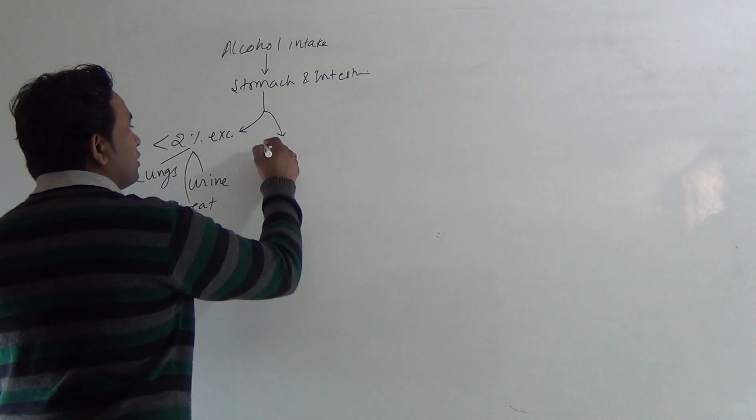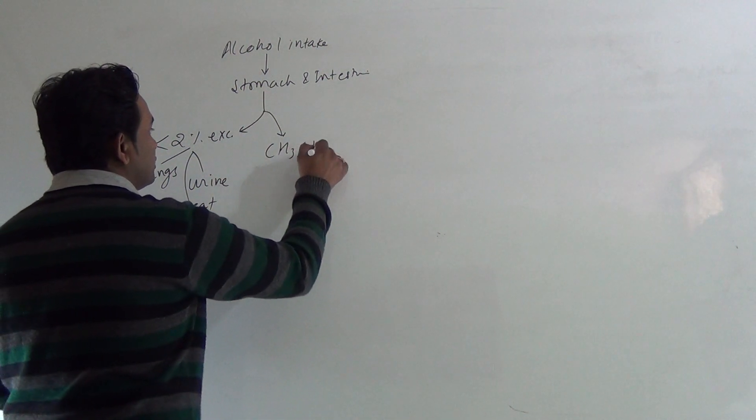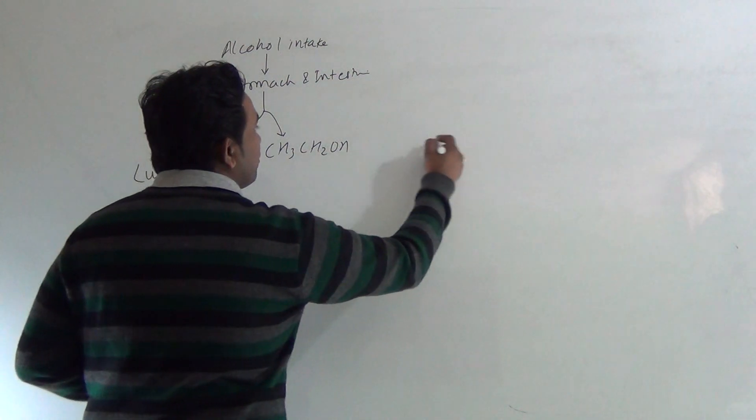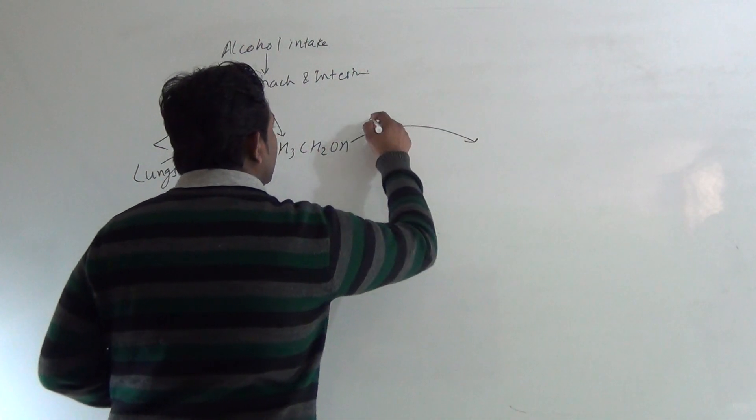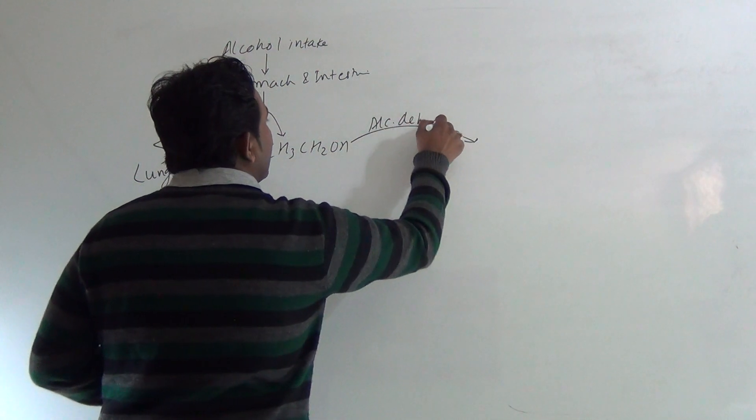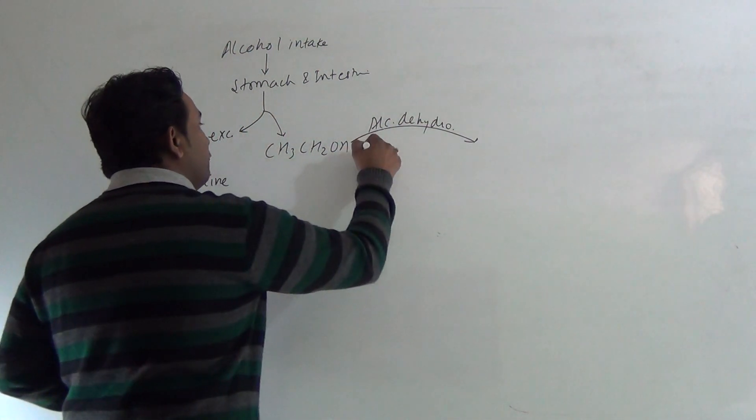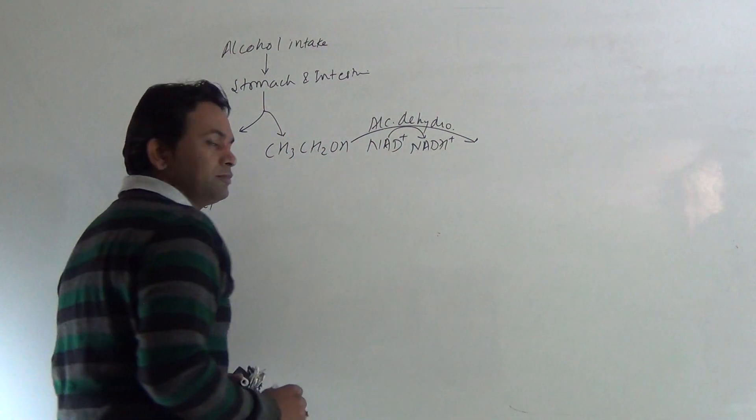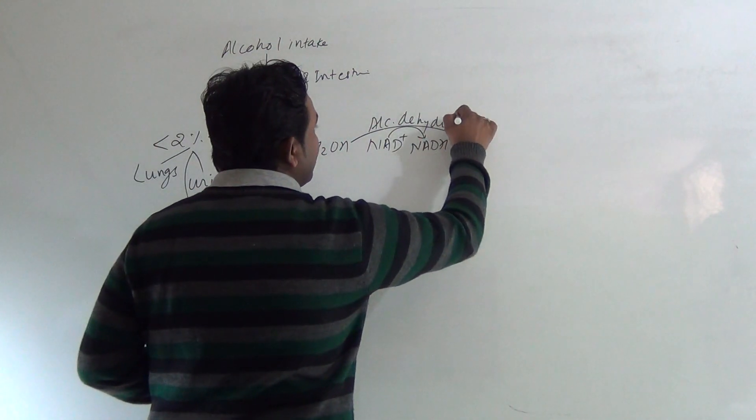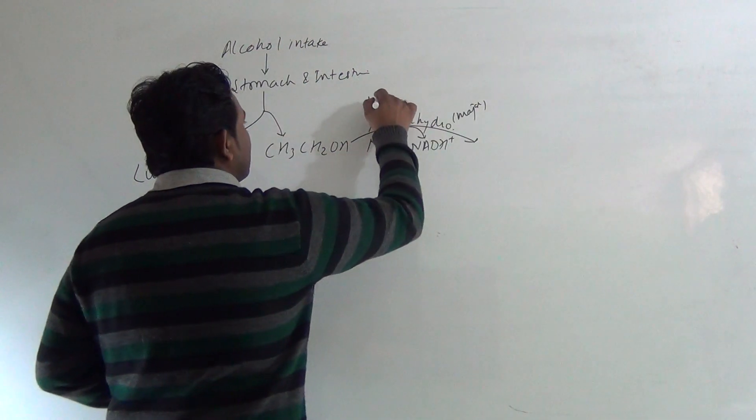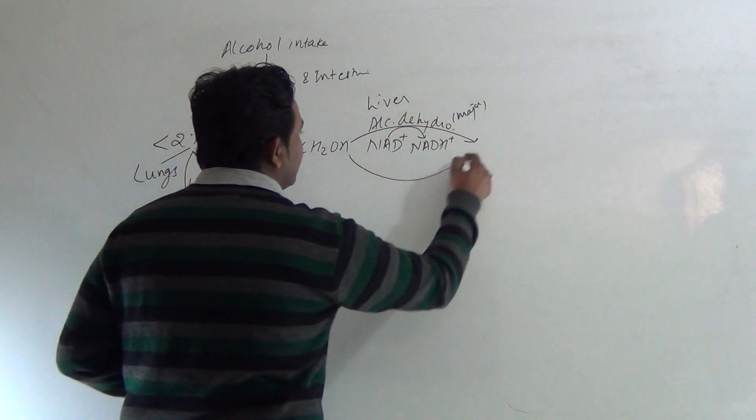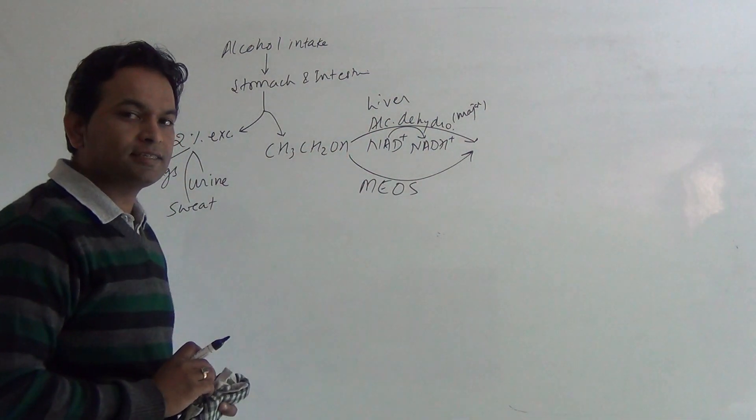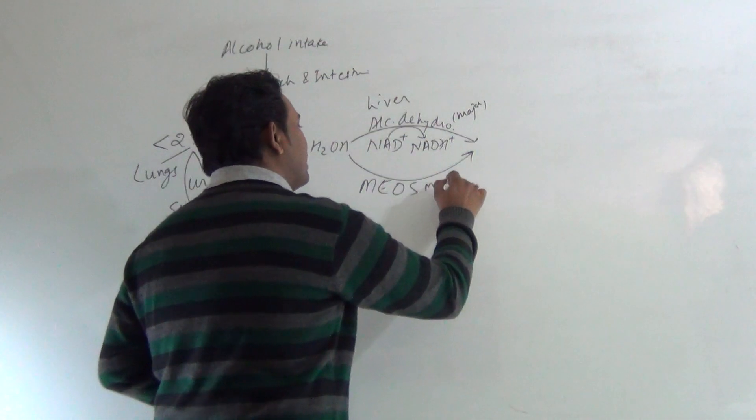The remaining alcohol, which is CH3CH2OH, that is ethyl alcohol, is metabolized by liver. In liver, alcohol dehydrogenase enzyme consumes NAD+ and converts it to NADH. The major action is of alcohol dehydrogenase. To some extent, MEOS, that is Microsomal Ethanol Oxidizing System, also works, but it has a minor role.